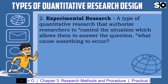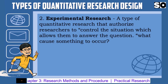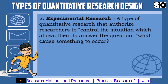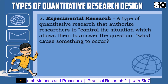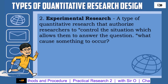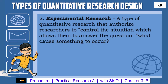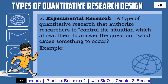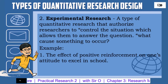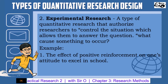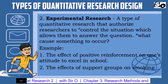Number 2: Experimental Research — a type of quantitative research that authorizes the researcher to control the situation, which allows them to answer the question: what caused something to occur. In addition, it also sanctions the researcher to identify cause-and-effect relationships between variables and to distinguish placebo effects from treatment effects. Examples: 1. The effect of positive reinforcement on one's attitude to excel in school. 2. The effect of support groups on smoking.